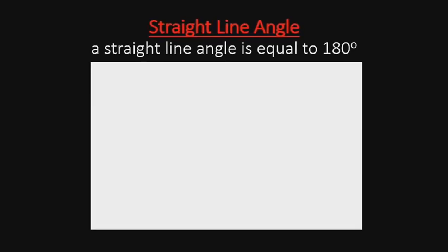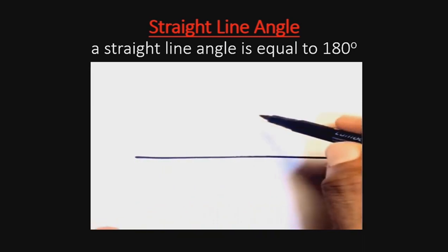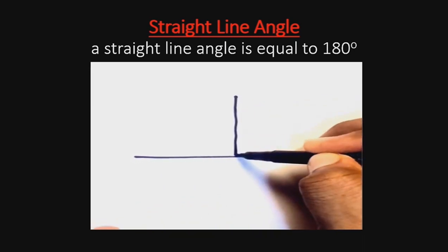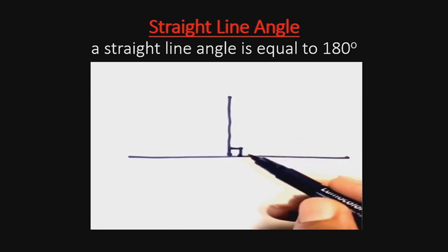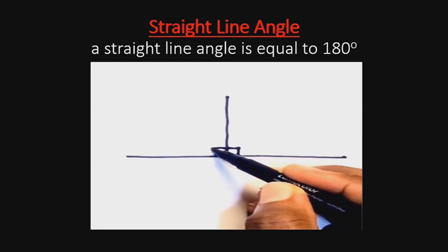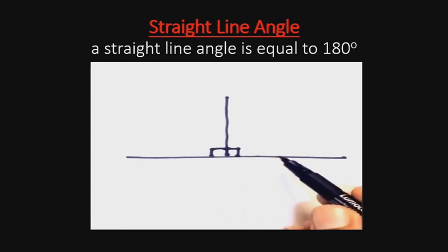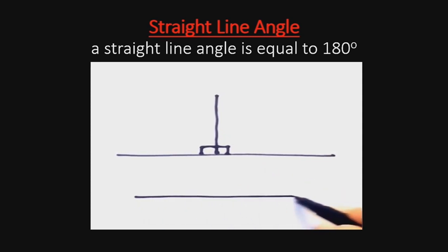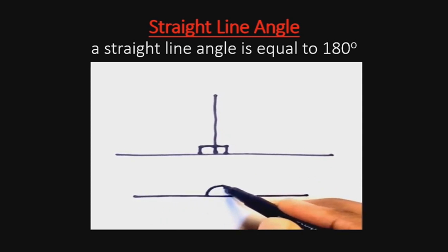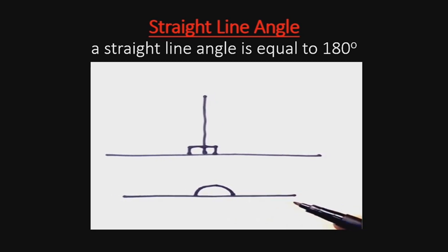The next angle we are considering is a straight line angle. A straight line angle is at 180 degrees. For example, if we take a right angle and another right angle, the addition of both right angles gives us 180 degrees. So, a straight line angle can be drawn at 180 degrees.